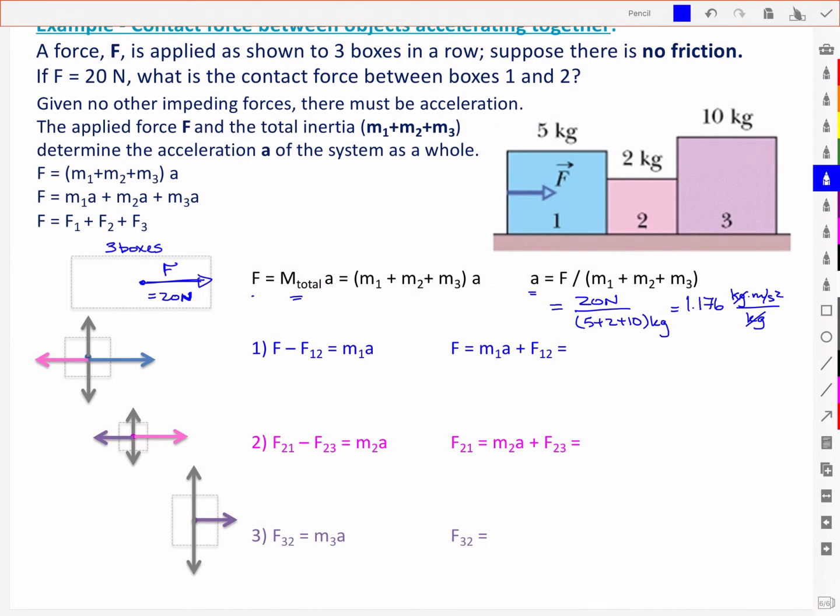For each one of those objects then, I can look at the sum of the forces in the x direction. And so I've got F in this direction, but I've got a negative F12 in this direction. And that will give me my acceleration for that box, m1, and I know what the acceleration is. And so I could go ahead. I know that my total force here was 20 newtons, but I can go and solve for the force F12.